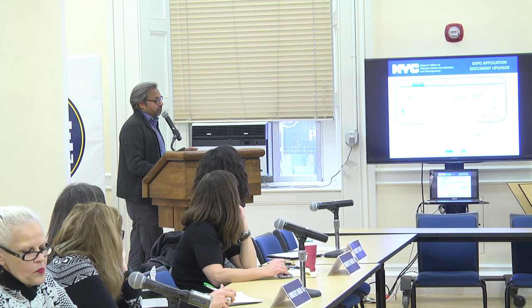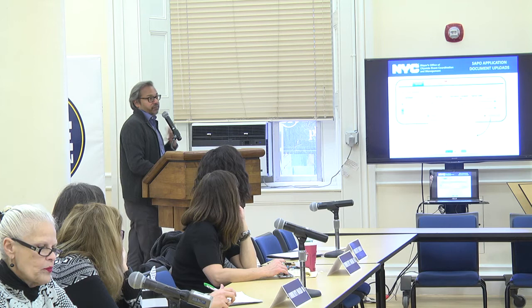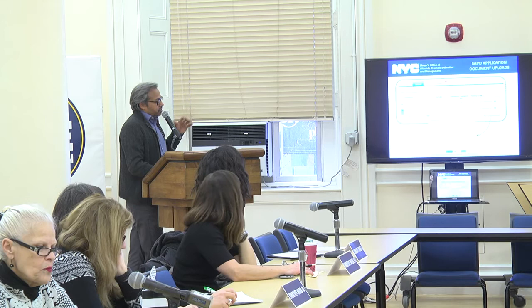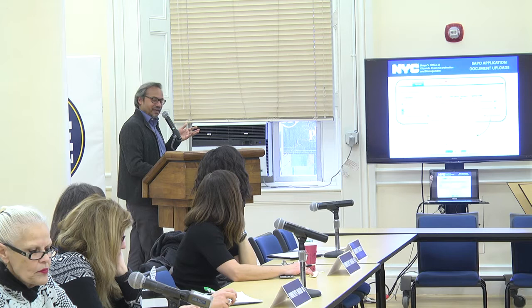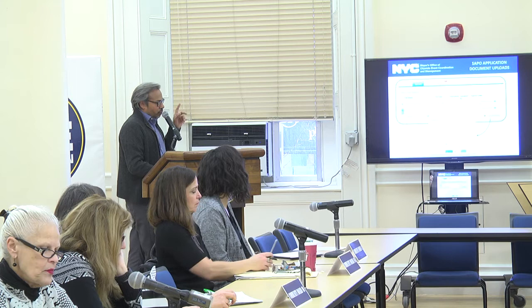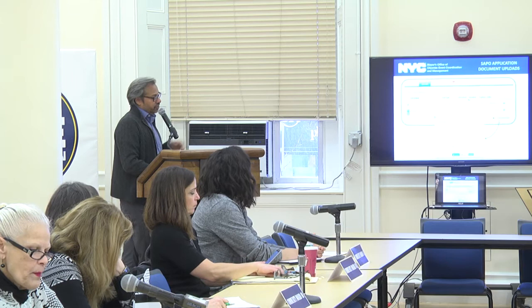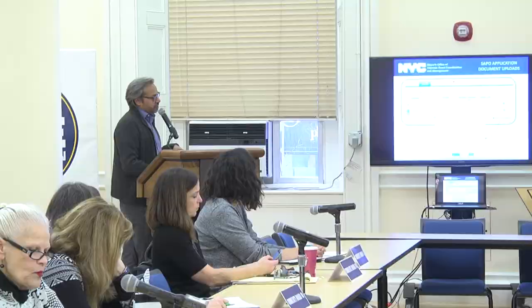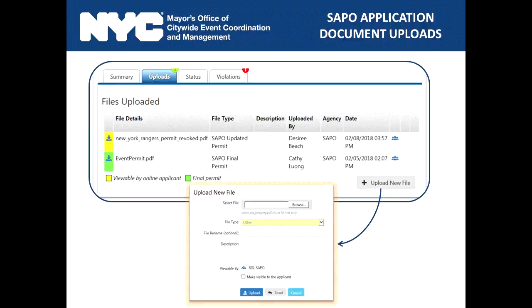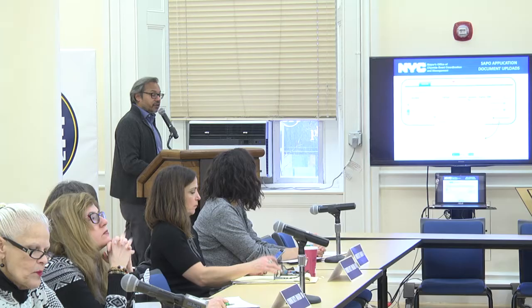Regarding file uploads: applicants upload documents like site plans to their applications, and this is where you view them. The icons are updated — hover over them to see what's happening. There's a three-person silhouette icon that shows which other agencies can view that document — for example, if it's viewable to BIDs, SAPO, and NYPD, you'll see all those agencies listed. You can also upload documents yourself and indicate which agencies you want them visible to.